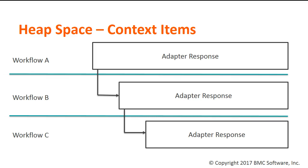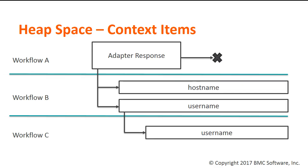BAO keeps those copies until the root workflow ends. So if you pass the same context item to several child workflows, you consume that memory for the entire life of the parent workflow. Because of this, it is generally better to split a large context item into its relevant parts. If a child workflow will only use some small part of a context item, like a hostname instead of an entire adapter response, pass just that small part to the child workflow. This causes less duplication of data, and the workflow has a smaller footprint.